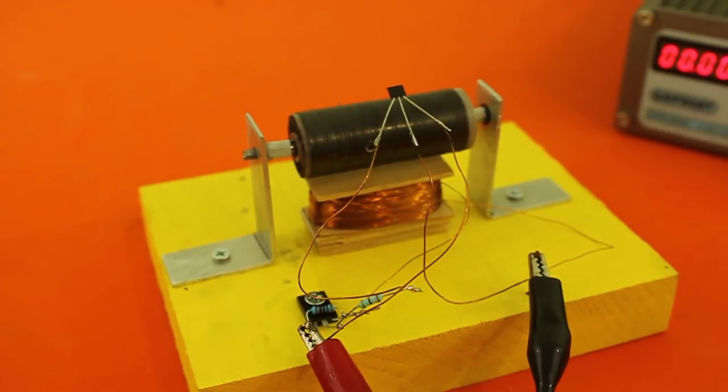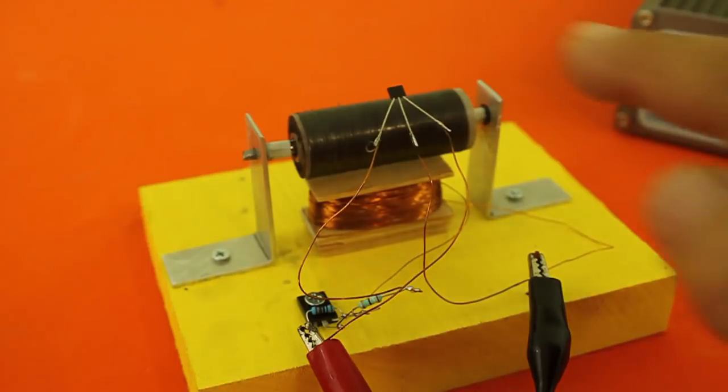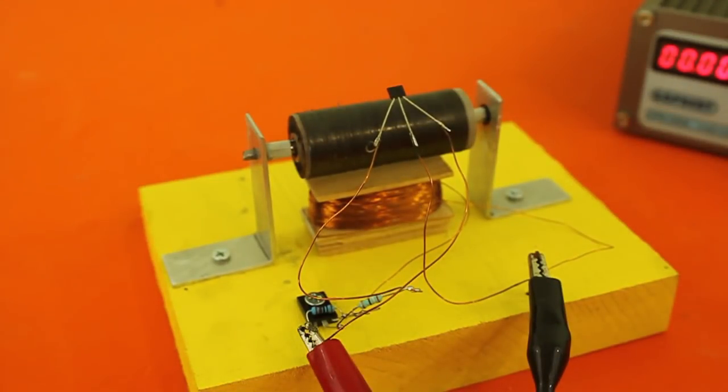This is the principle of operation of brushless motors. We replace the brushes and commutator with the Hall sensor. In this way the motor is more efficient and has less wiring.